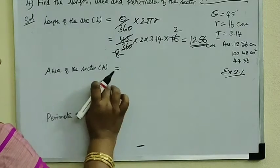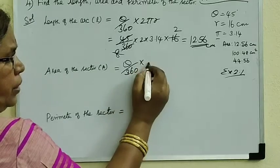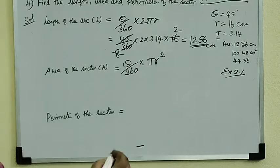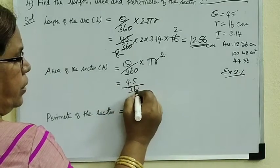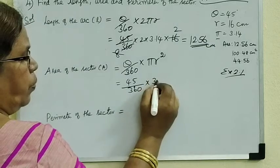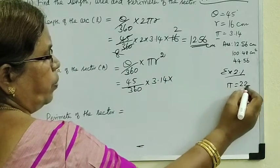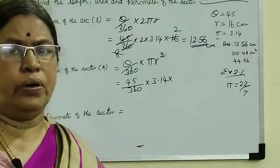That is the area of the sector. Area of the sector formula: theta by 360 into pi r squared. So theta value 45 degrees by 360 into 3.14. Usually pi value is 22 by 7, but in this question it is given 3.14.